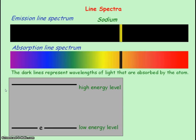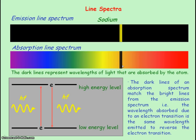An absorption line spectrum shows dark lines, which represent the absence of colors — these are the wavelengths of light absorbed by the atom. This occurs when an electron absorbs a photon and moves from a low energy level to a high energy level. The dark lines of an absorption line spectrum match the colored lines of an emission line spectrum, because they represent the same electron transitions between energy levels, but in reverse.